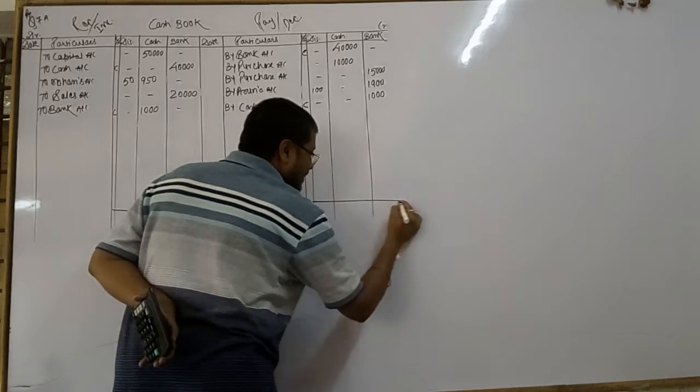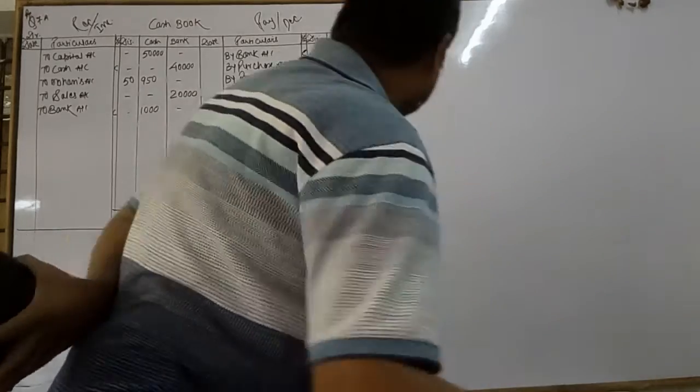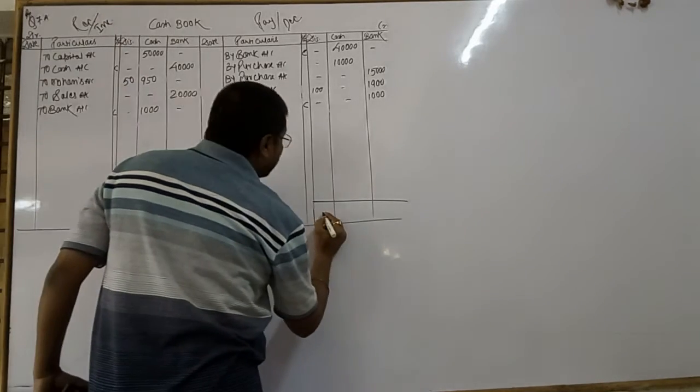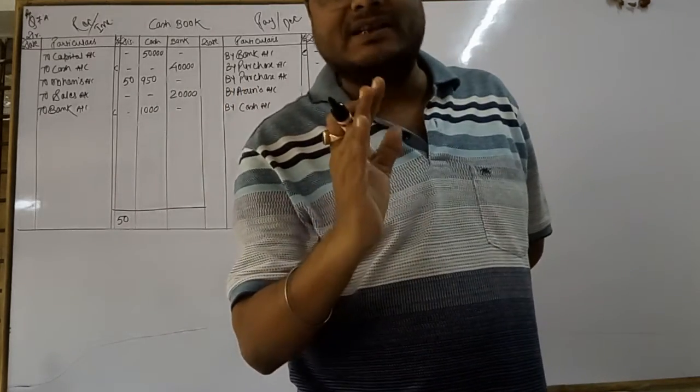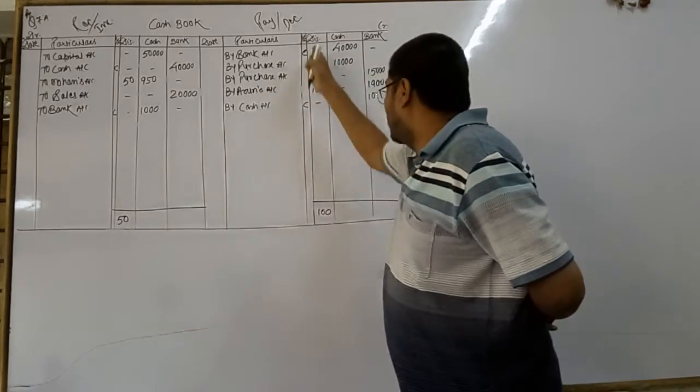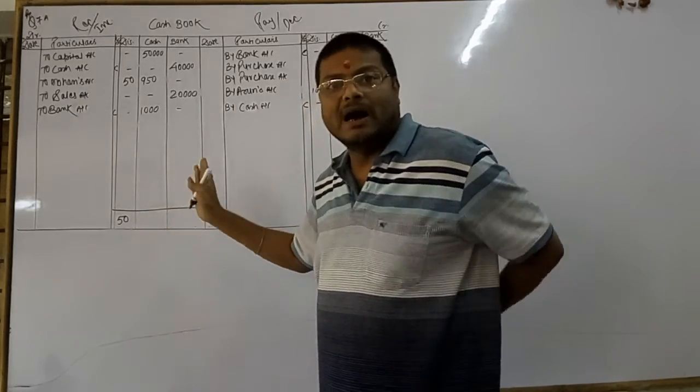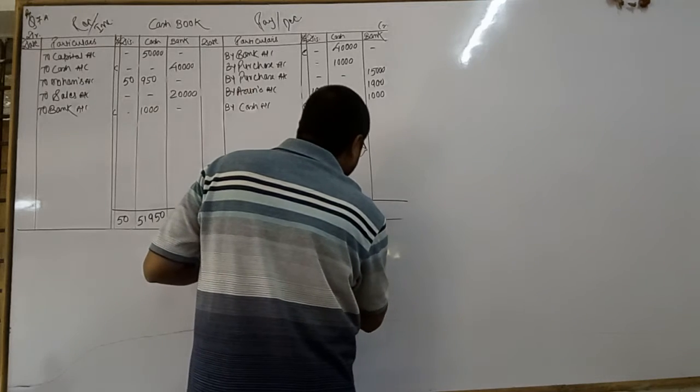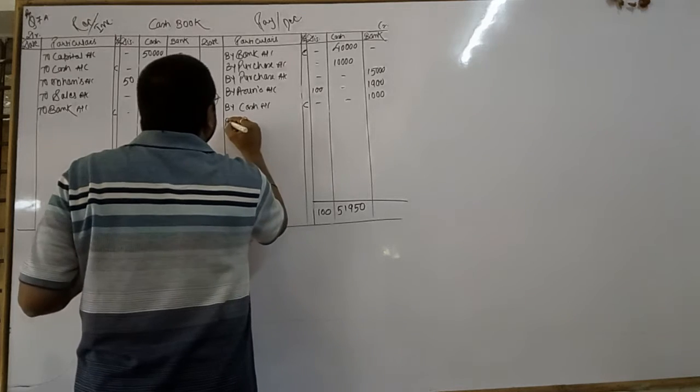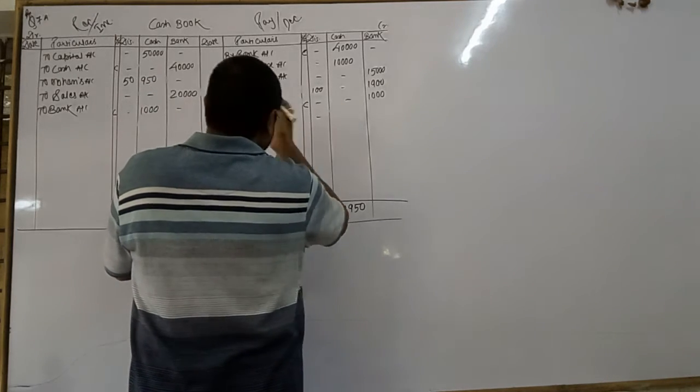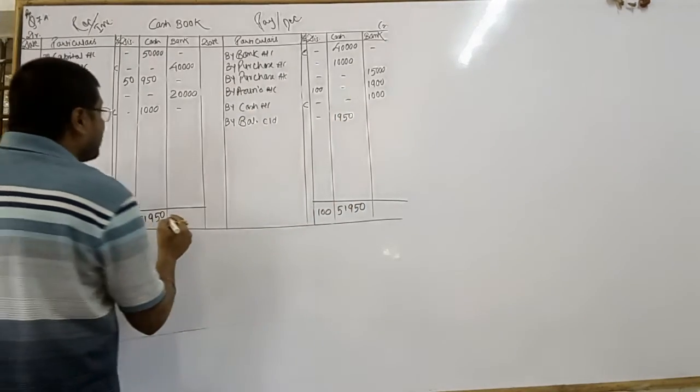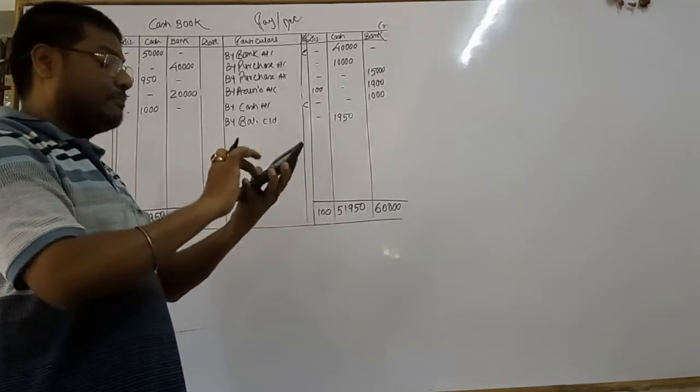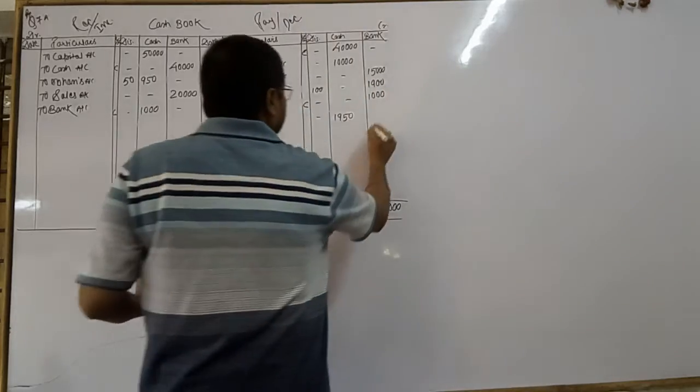Now I am going to balance this. Total discount 50 and rupees 100. Discount column are not balanced. Total of debit recorded in debit side and total of credit recorded in credit side. But cash and bank column are balanced. Total of cash 51,950. 51,950 minus 50,000. Therefore, cash in hand balance C/D rupees 1,950. Bank balance 40 plus 20 equal to 60,000. 60,000 minus 15,000 minus 1,900 equal to 43,100.